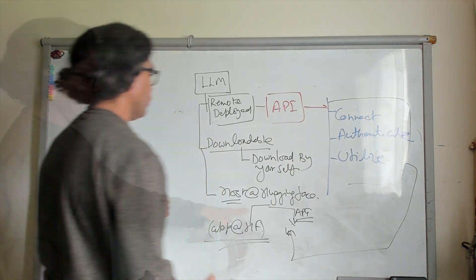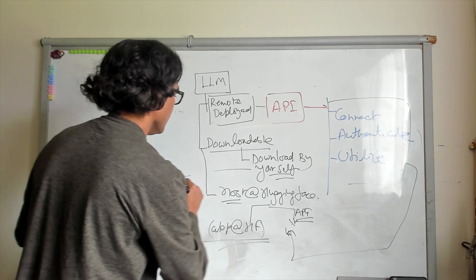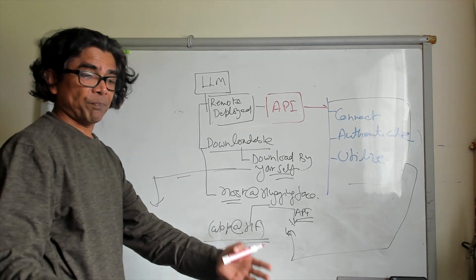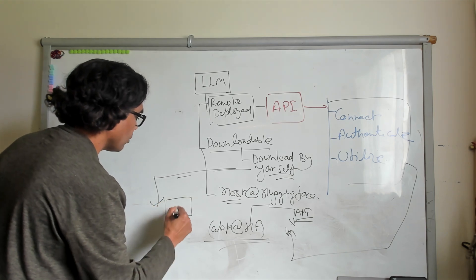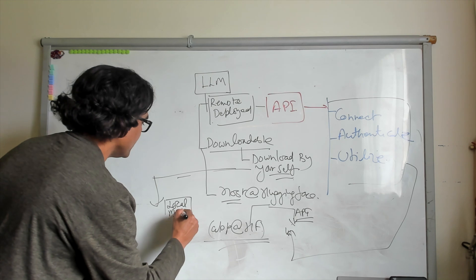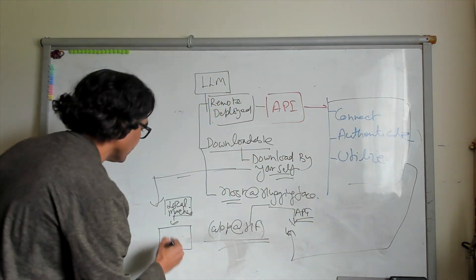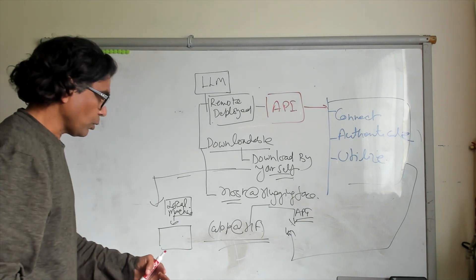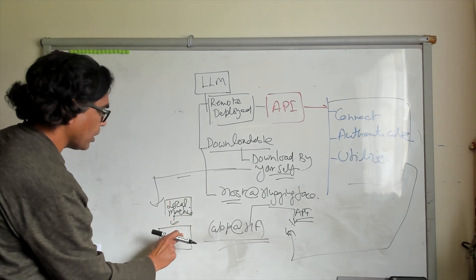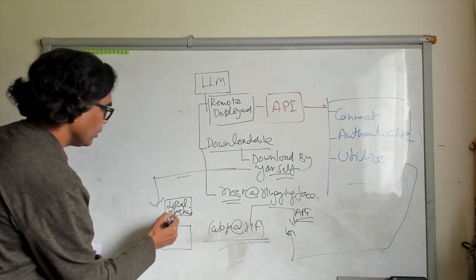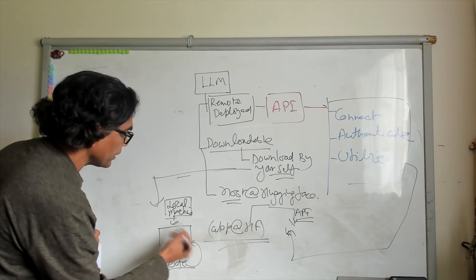The code might be a little different depending on the method. If you choose to download the model yourself — for example, if you have your own Linux machine with an NVIDIA GPU — you can download that model locally. So in local machine deployment, you use the compute available in the local machine. There is no connect, no authenticate, but in the utilize step you use the tokenizer, and if you need to split the tokens to manage the dictionary size of the model, you do that, and then finally submit your request. That option is also available.